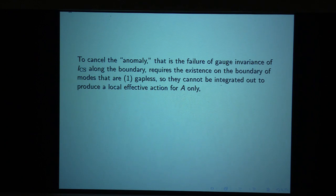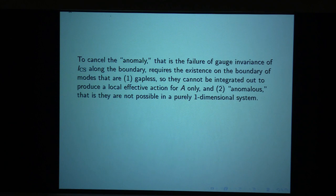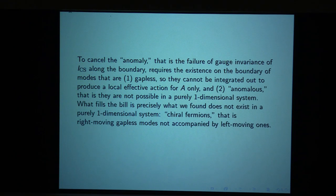That means on the boundary there have to be excitations that, first of all, are gapless — so they cannot be integrated out to produce a local effective action for A only — and secondly, they have to be anomalous: not possible in a purely one-dimensional system. What fills the bill is precisely what we found doesn't exist in a purely one-dimensional system: chiral fermions, right-moving gapless modes not accompanied by left-moving ones.